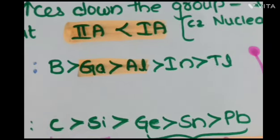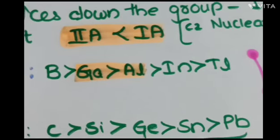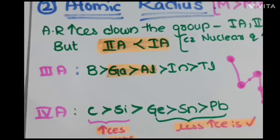Also, simply you can remember like this: addition of an extra electron to the IIA group will decrease its atomic radius, and thus there is a decrease in atomic radius compared to IA. So next we'll go to the IIIA group.